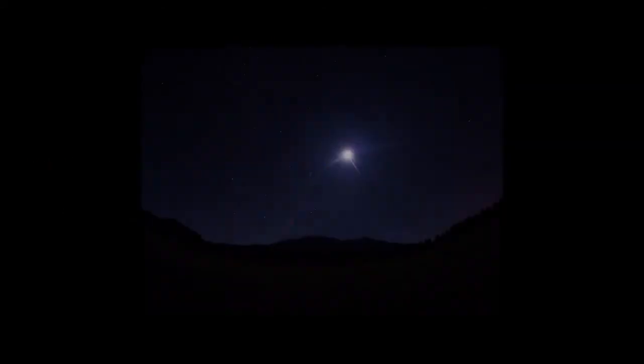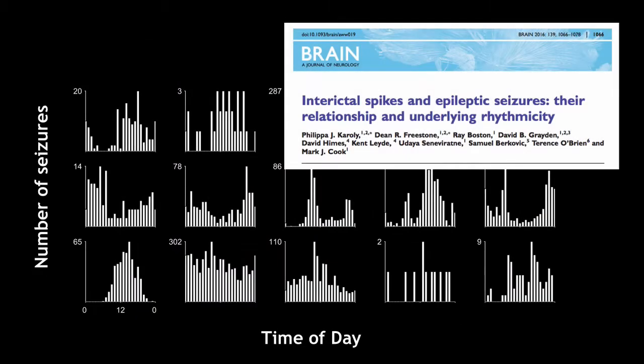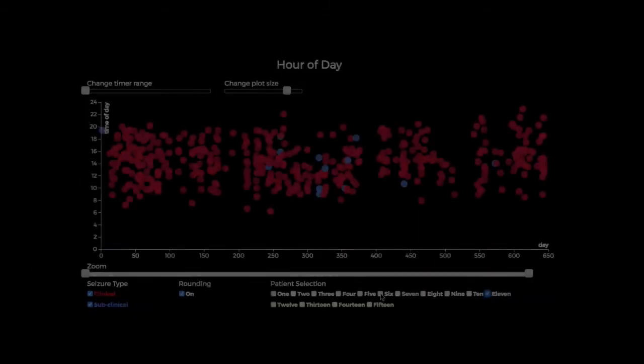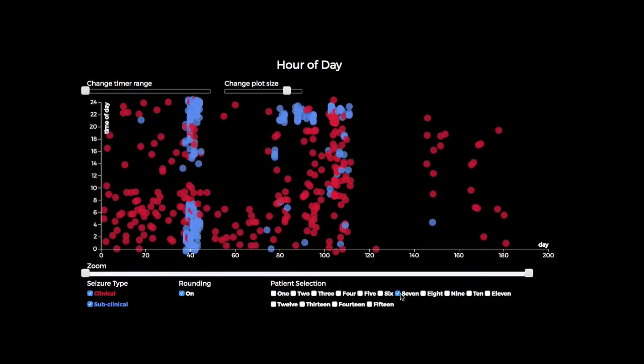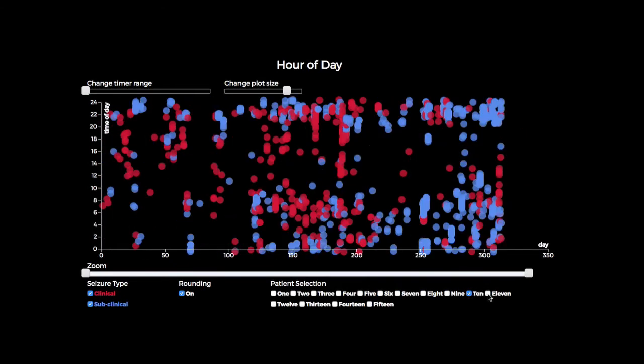For example, circadian rhythms are universal factors that modulate our brain's activity. In our previous work, we demonstrated that seizure occurrences are also strongly influenced by time of day but are highly patient specific. We speculated that these circadian rhythms could be used to improve forecasting models.